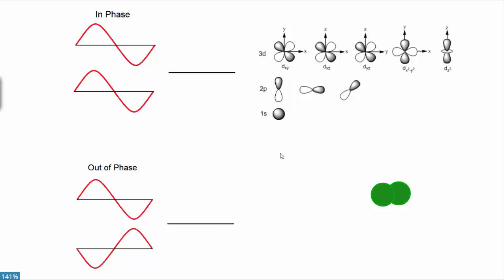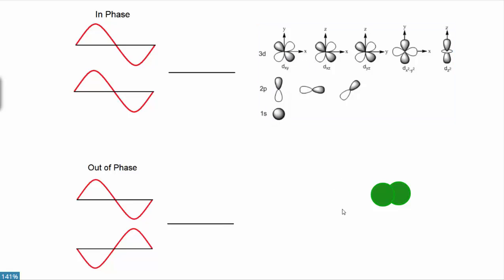Before we dive too deep, our orbitals are all described with lovely shapes: spherical for s orbitals, dumbbell shape for p orbitals, and most are four-leaf clovers for the d orbitals. Those shapes are actually three-dimensional mathematical equations we call wave functions.